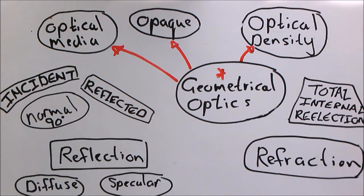So the higher the optical density the slower light will travel through that medium and the lower the optical density the faster light will travel through that medium. But light will not be able to travel faster through a medium than what it travels through a vacuum.